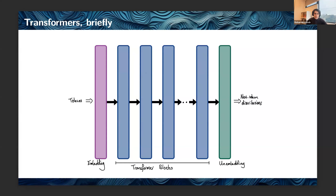Language model transformers like GPT-4 and GPT-3 process sequences of tokens, which are generally words or parts of words. The output is a sequence of probability distributions on the next token given the preceding tokens. It begins by embedding each token into some high-dimensional vector space R^N using an embedding layer. This representation is then processed by a sequence of transformer blocks, and probability distributions are extracted using an unembedding layer.